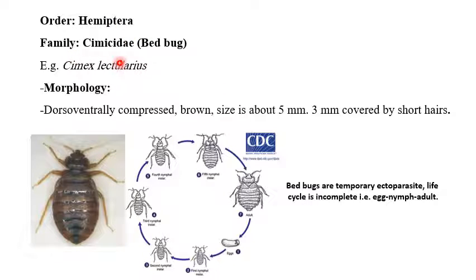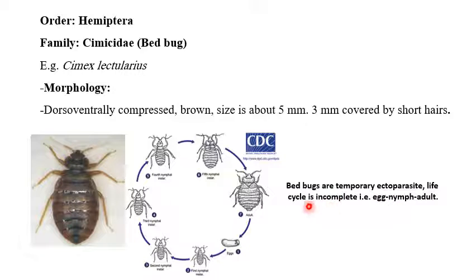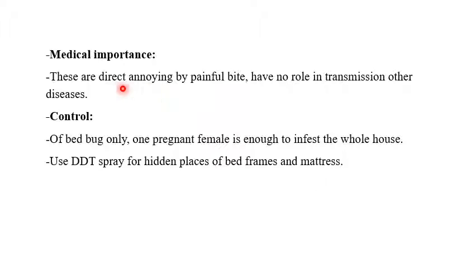Family Cimicidae — for example, Cimex lectularius, the bed bug. Morphology: laterally compressed, brown, size about 5 mm by 3 mm, covered by short hairs. Bed bugs are temporary ectoparasites. Life cycle is incomplete metamorphosis: egg, nymph, adult.